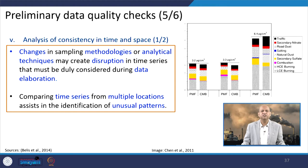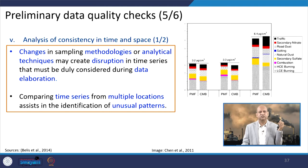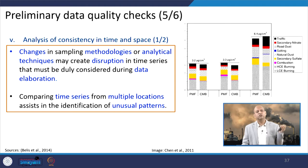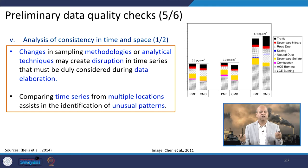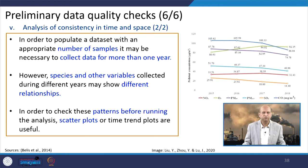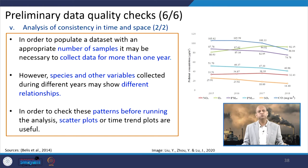Consistency in time and space must be analyzed, since changes in sampling methodology or analytical techniques may create disruptions in time series. Comparing time series from multiple locations assists in identifying unusual patterns — if one site gives poor information, a nearby site can serve as the base case. Through time series analysis, species and variables collected over different years can be examined for upward or downward trends.